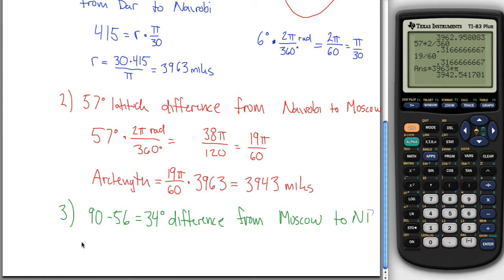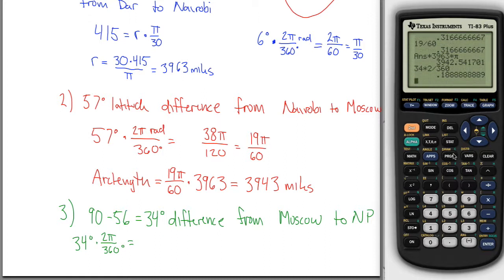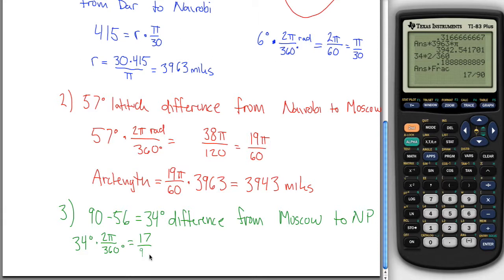But again, we don't care how many degrees, we care how many radians. We can figure that out. Thirty-four degrees times two pi divided by 360 equals, I don't know, I'll use a calculator here. Thirty-four times two divided by 360 gives me this nasty decimal. But what I can do is change that back into a fraction by using the math thing here, convert to fraction, and it'll tell me that 17 over 90, and don't forget we still had that pi. So, 17 pi over 90 is the radian difference from Moscow to the North Pole.